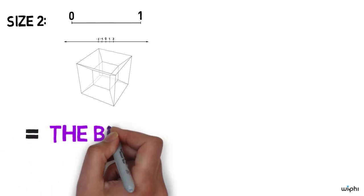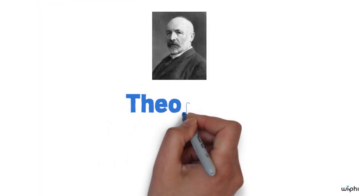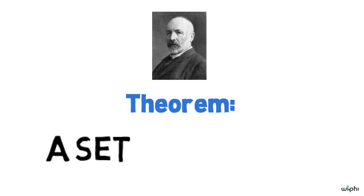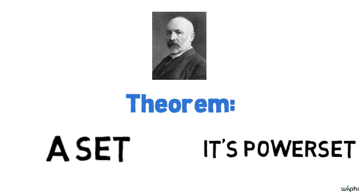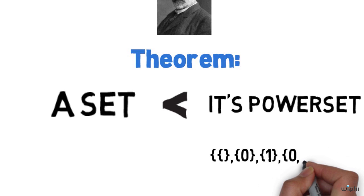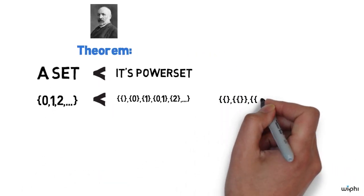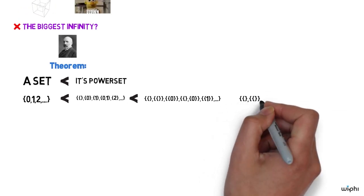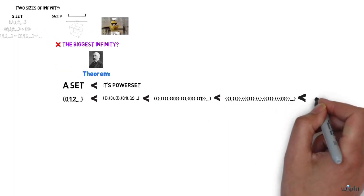So, is the infinity of the real numbers the biggest infinity there is? As it turns out, there are infinitely many sizes of infinity. Another thing Cantor proved is that whenever you have a set, the set's power set — in other words, the set of all subsets of the original set — is bigger. So the power set of the set of natural numbers is bigger than the set of natural numbers, and the power set of the power set is bigger than the power set, and the power set of the power set of the power set is bigger than that, and so forth with no end.